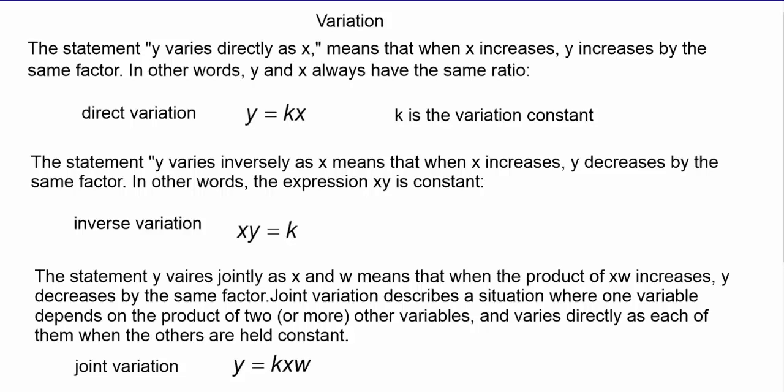We move from graphing rationals to variation, which is a little bit of review and a little bit new from Algebra 1. Let's start with direct variation. If the statement says Y varies directly as X, as you can read in the slide, it means that when X increases, Y increases, or they have a constant ratio.